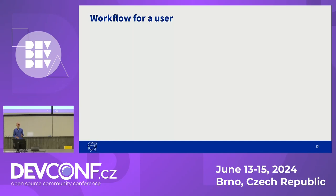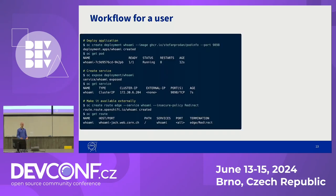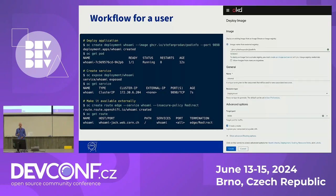Now, what does the user actually need to do to get to our website? Well, they should deploy an application either using our PaaS or one of the pre-configured services that we have. They can use a standard Docker image for this, they create a service, and they need to make it externally available by creating an ingress or a route for it. All of this can also be done through the OKD web interface, which is actually one of the reasons why we chose OKD as the base for our platform as a service, because it provides a very user-friendly interface. The user does not need to know anything about Kubernetes details, what is a service, how does a route work.